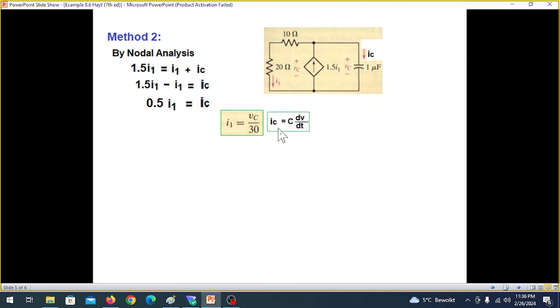So we can write that I1 is VC divided by these two resistances. Also we know that the current through the capacitor is given by IC is C dV/dt.